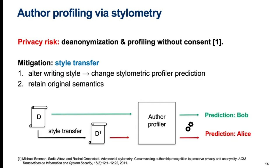To defend against this, the author can do style transfer to change the writing style of the original text in such a way that aims to change the prediction made by the author profiler that the adversary uses. A second very important criterion for style transfer is that the semantic interpretation of the original text is retained to a maximal extent.